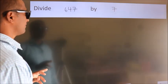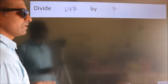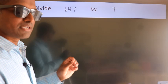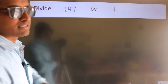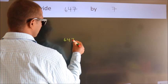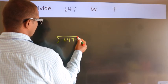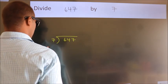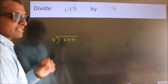Divide 647 by 7. To do this division, we should frame it in this way. 647 here, 7 here. This is your step 1.